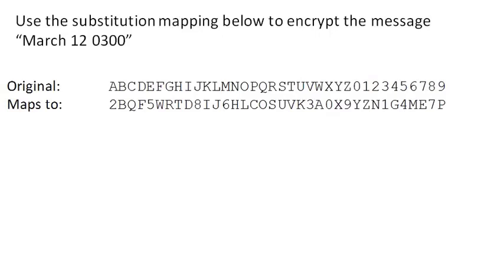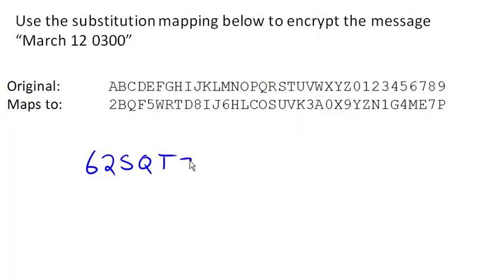To encrypt, we do the same thing as before — find each character in the original and figure out what it maps to. M maps to 6, A maps to 2, R maps to S, C maps to Q, H maps to T, 1 maps to Z, 2 maps to N, 0 maps to Y, 3 maps to 1, and 0 maps to Y. There is our encrypted message using this cipher.